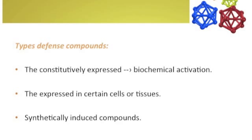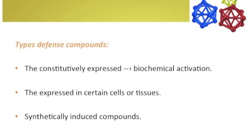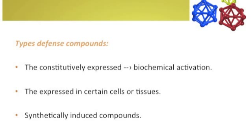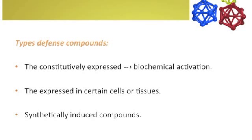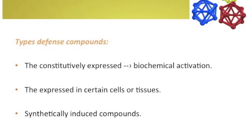There are stages in the life of a plant where the concentration of bioactive compounds is greater. Identifying plant materials possibly containing higher levels of bioactive compounds is very important. One example is the defense compounds that plants use to repel insects. There are three types: the first is constitutively expressed by biochemical activation, the second is compounds expressed in certain cells or tissues, and finally, the synthetically induced compounds.